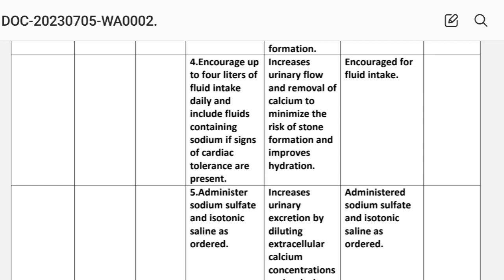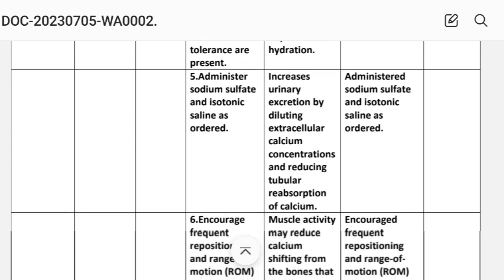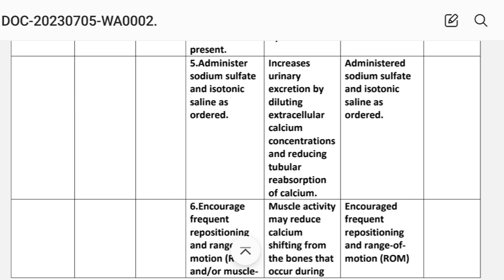Intervention five: administer sodium sulfate in isotonic saline as ordered. Rationale: this increases urinary excretion by diluting extracellular calcium concentrations and reducing tubular reabsorption of calcium. Implementation: administer sodium sulfate in isotonic saline as ordered.